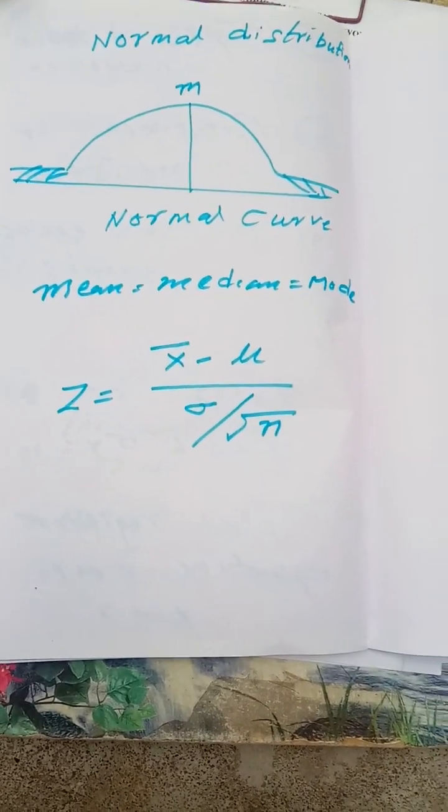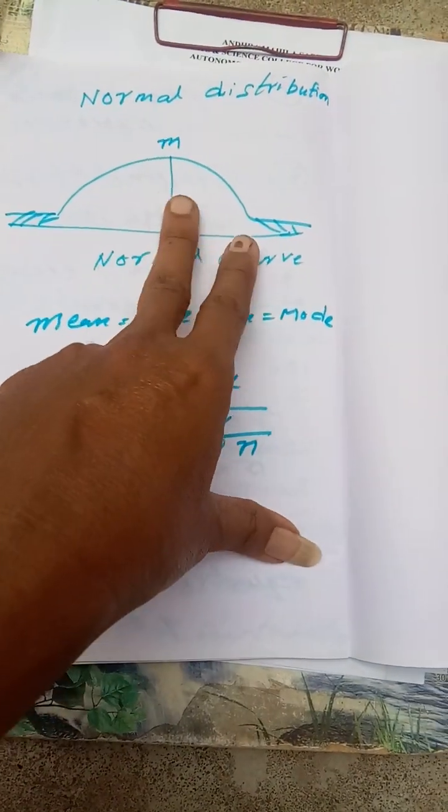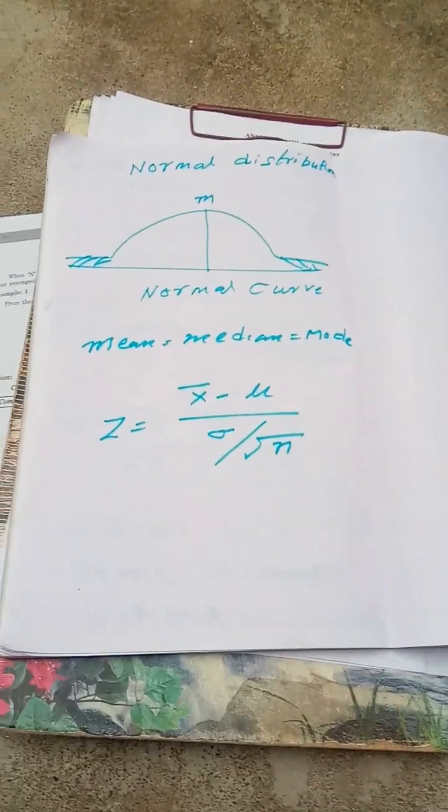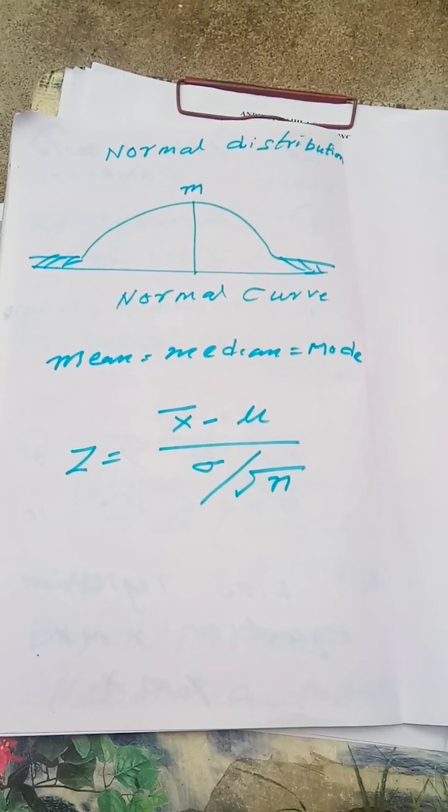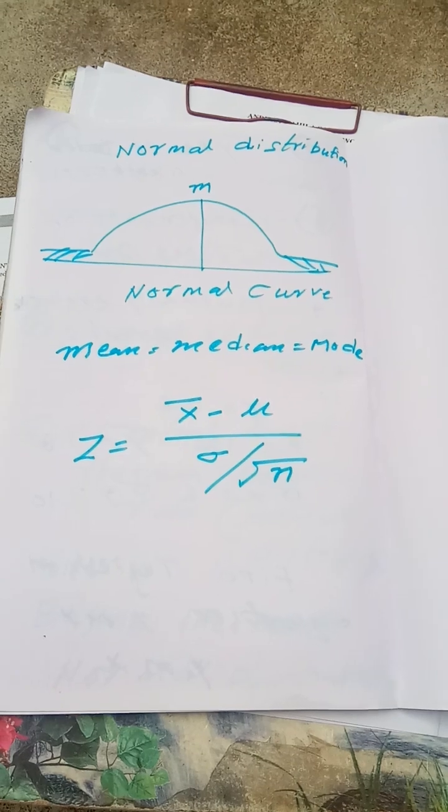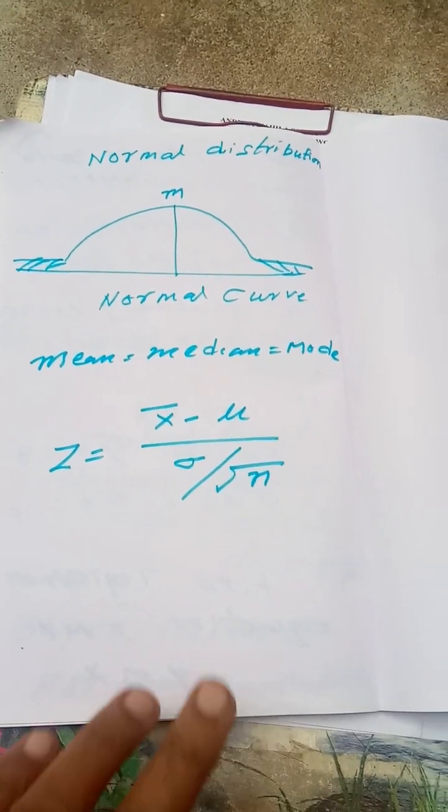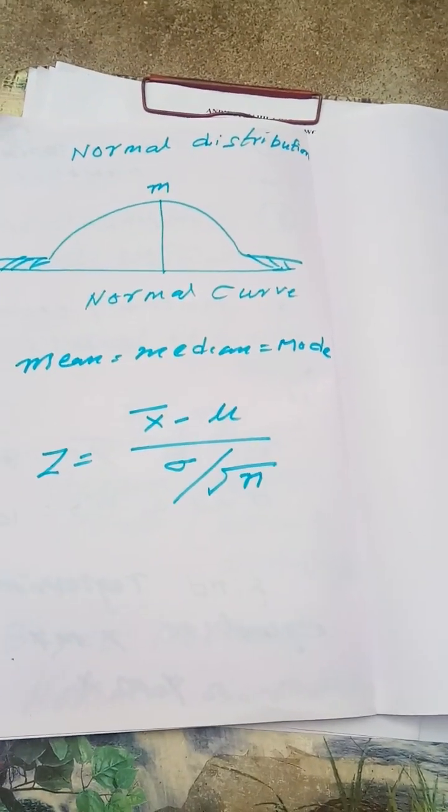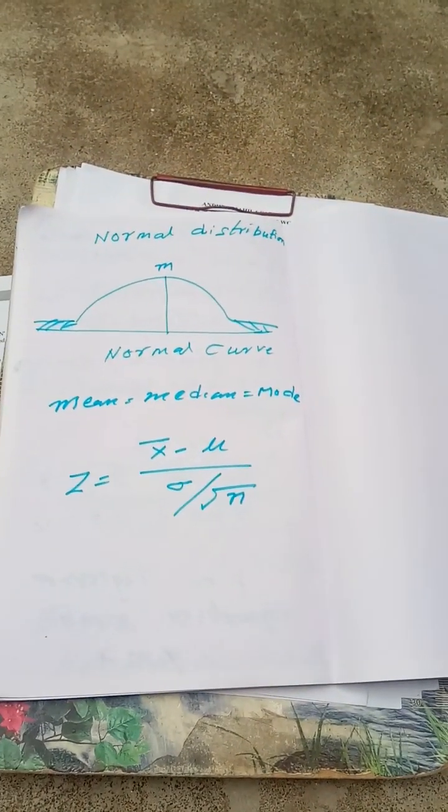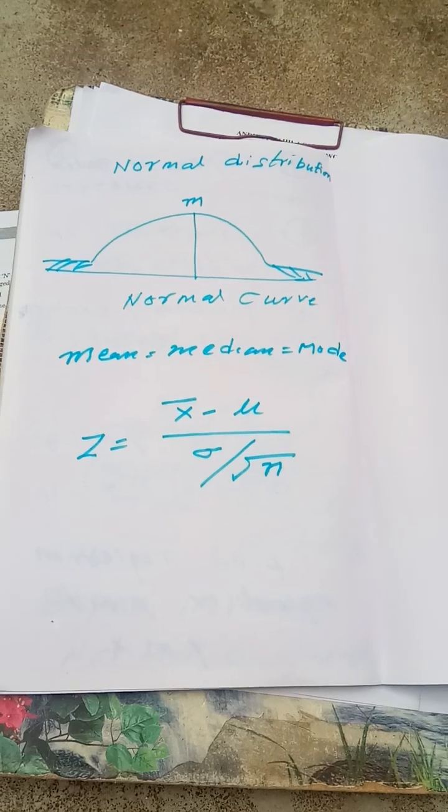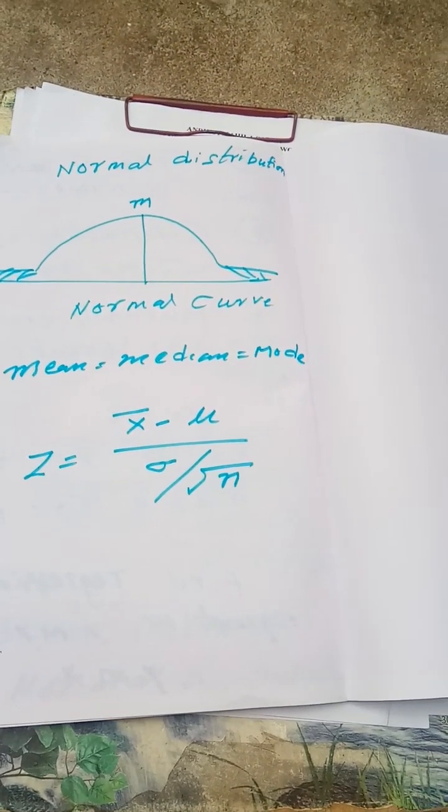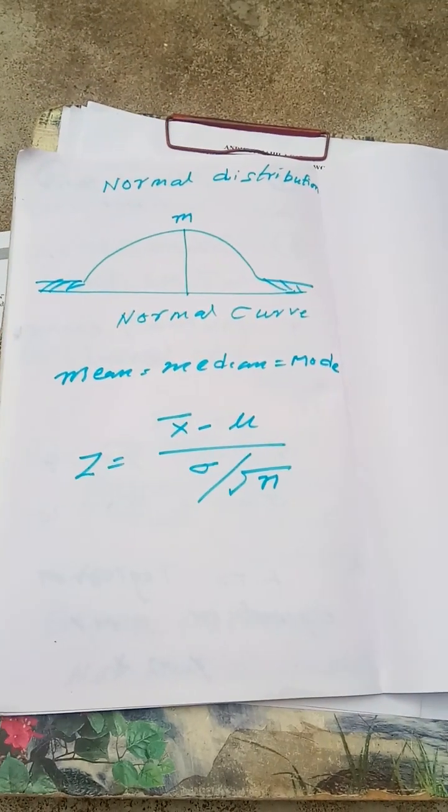But you need to know the mean is equal to, mu is equal to. Z is equal to x bar minus mu by standard deviation by under root n. You can find x bar minus mu is equal to x bar minus. Standard deviation by under root n. Z is equal to x bar minus mu by standard deviation.